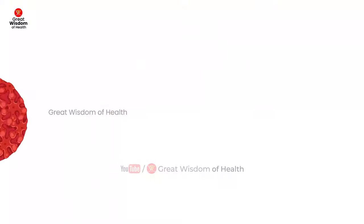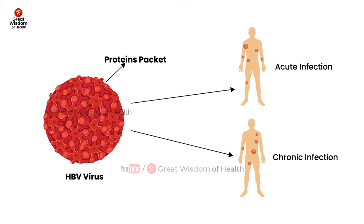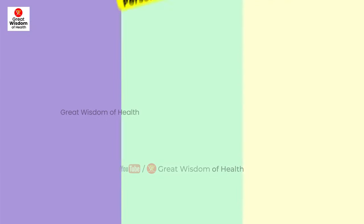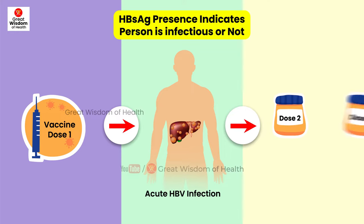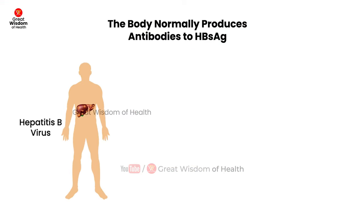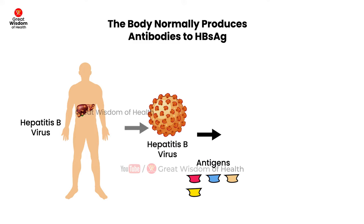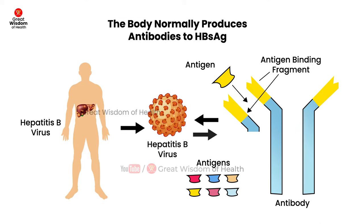HBsAg is a protein on the surface of the hepatitis B virus that can be detected in high levels in serum during acute or chronic hepatitis B viral infection. The presence of HBsAg indicates that the person is infectious, except when it might be transiently positive within 30 days after a dose of hepatitis B vaccine. The body normally produces antibodies to HBsAg as part of the normal immune response to infection. HBsAg is the antigen used to make the hepatitis B vaccine.